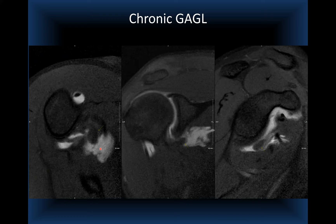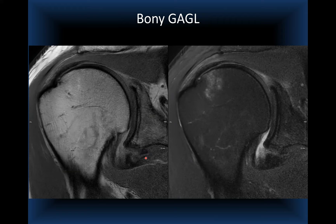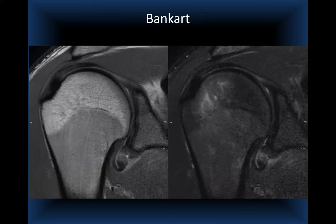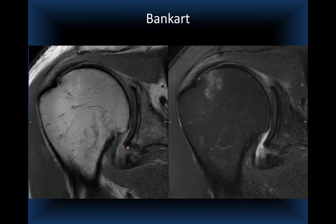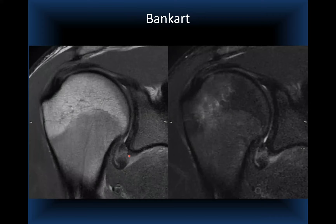A bony GAGL case also shows an intact labrum, bone marrow edema from the Hill-Sachs lesion, indistinctness of the scapular neck cortex, and a small piece of bone pulled from the glenoid insertion of the inferior glenohumeral ligament. This contrasts with a Bankart lesion where the labrum is abnormal and the entire anteroinferior capsulolabral complex is displaced. The key distinction: GAGL — normal labrum with capsular avulsion; Bankart — abnormal labrum with the entire complex detached.